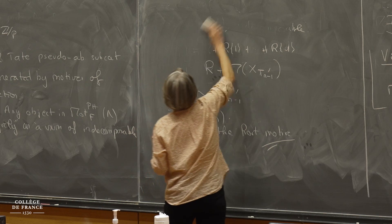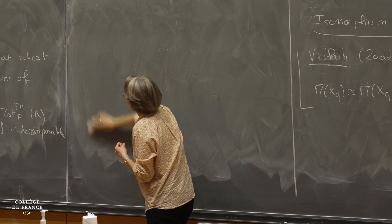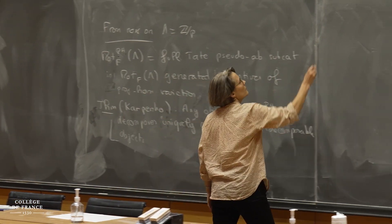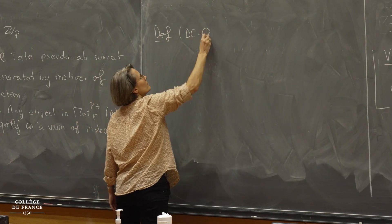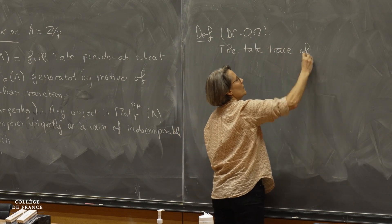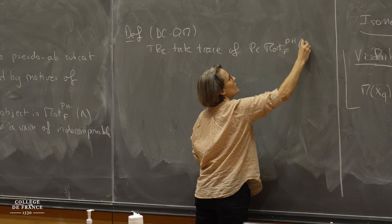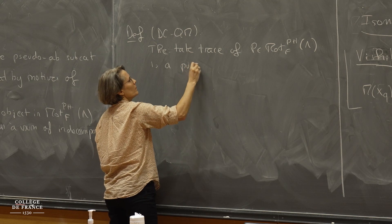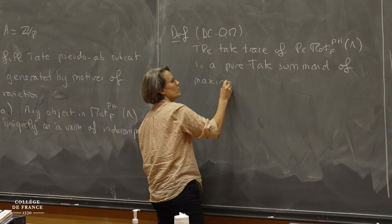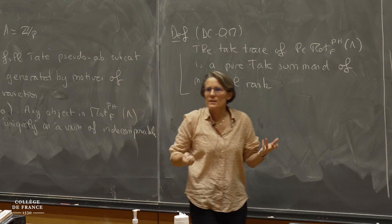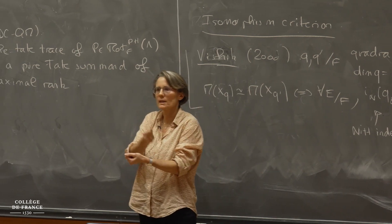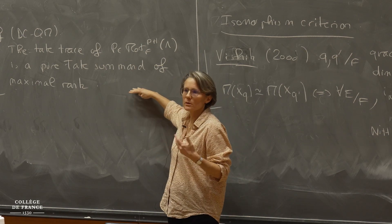With this in hand, you can define an invariant — in joint work with Charles — which I will call the Tate trace. The Tate trace of an object P in this category is a pure Tate summand of maximal rank. What it means is: you decompose your object as indecomposables, you keep all the indecomposable summands which are Tate motifs — shifts of the motive of a point — you forget the other ones, and you get an object called the Tate trace.